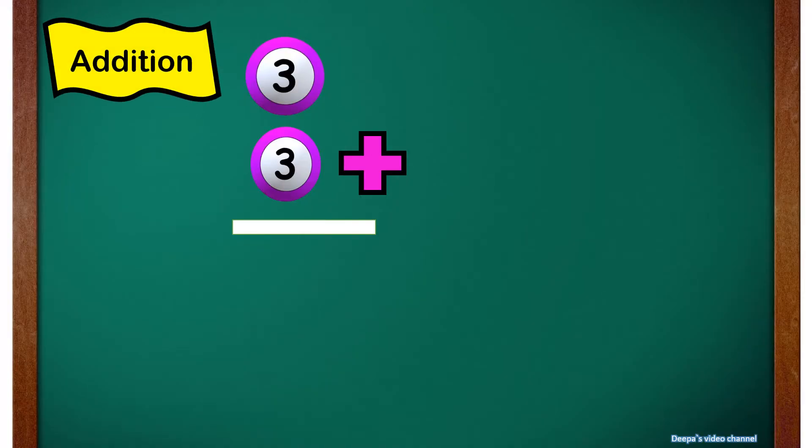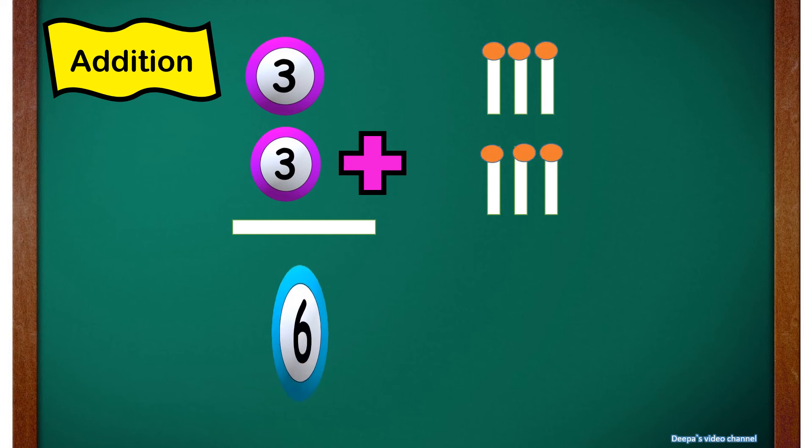The first number is three. Draw three lines. The second number is also three. Draw three more lines. Now we add all the lines: one, two, three, four, five, six. The answer is six.